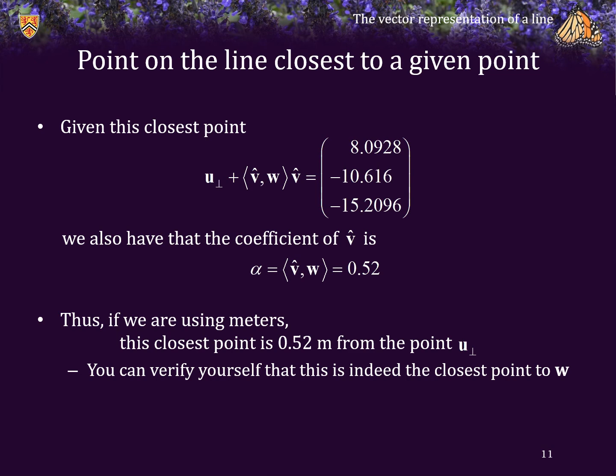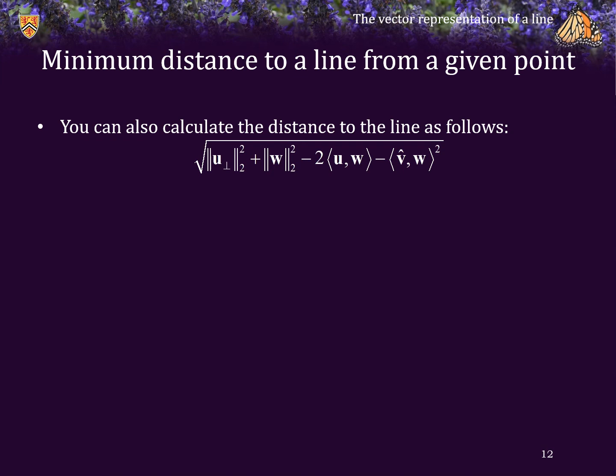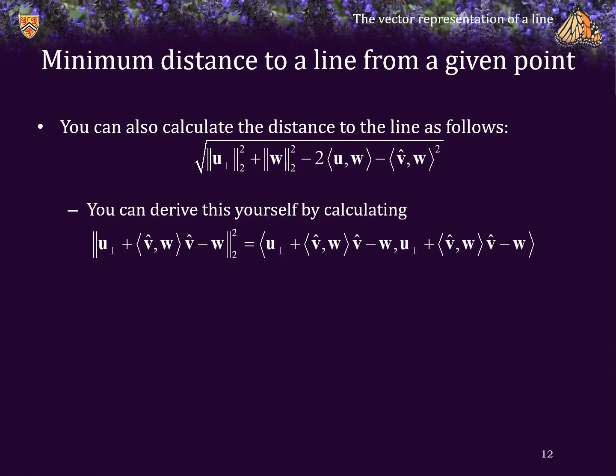You can verify that this is indeed the closest point to w by measuring, for example, the distance from w to this point here, and say the distance from w to u_perp + 0.51 times the normalized v̂, or u_perp + 0.53 times the normalized vector v̂. You can also calculate the distance to the line from w with this reasonably straightforward formula. Given that you've already probably pre-calculated the two-norm of u_perp, and we already needed to calculate the inner product of v̂ and w, this is a straightforward calculation. You can even derive this by expanding this expression and simplifying, then taking the square root.